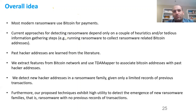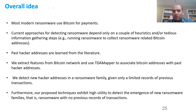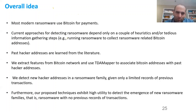Current approaches for detecting ransomware payments on Bitcoin involve heuristics and information gathering. Researchers infect a computer knowingly and see which addresses it demands ransom to, and past hacker addresses are sometimes known because companies report to police. What we do is take the full Bitcoin network, extract features, and use TDA mapper to associate Bitcoin addresses of today with known hacker addresses from the past. These past hacker addresses come from three research papers, and we detect new hacker addresses for every ransomware family — we looked at 29 of them.